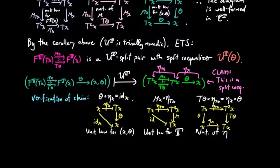And T theta eta TX is equal to eta X theta by naturality of the unit eta. Thus, the green diagram is in fact a split co-equalizer, and so mu X and T theta is a UT-split pair.